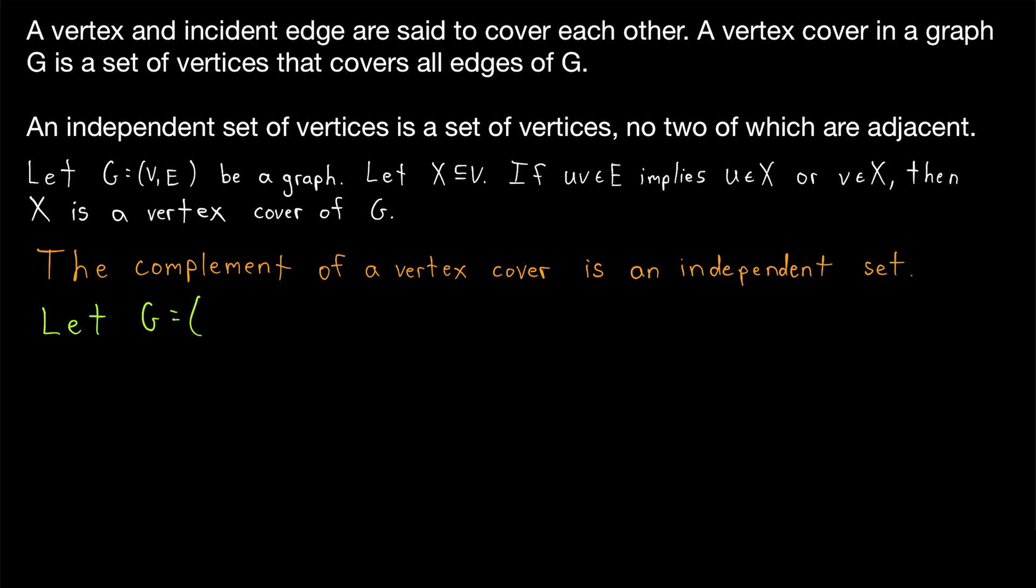We'll say let G be a graph with vertex set V and edge set E. Then we'll have to take an arbitrary vertex cover. So we'll say suppose X, which is a subset of the vertex set V, suppose X is a vertex cover. That means it covers all edges of G. So every edge has at least one end vertex in the cover X.